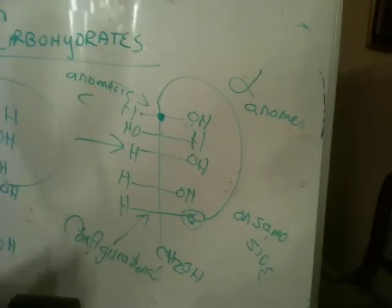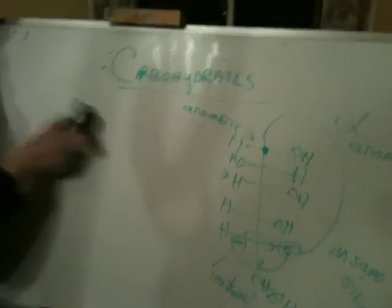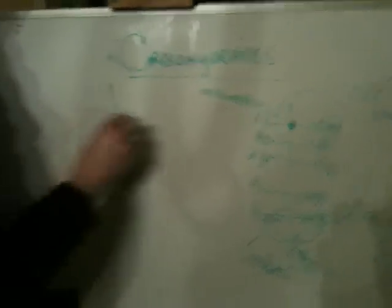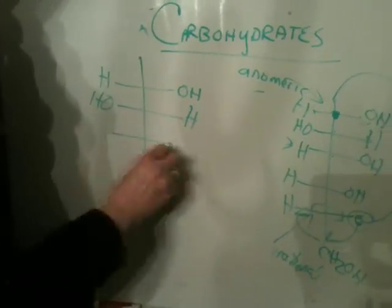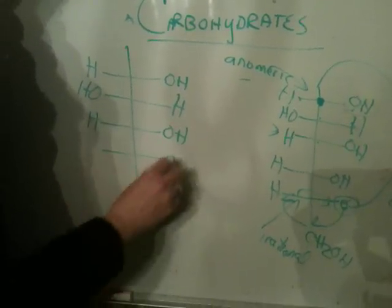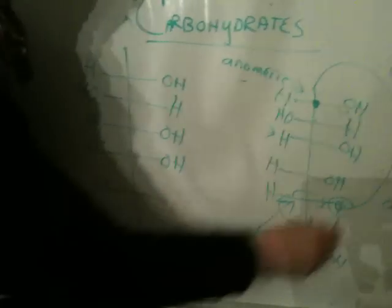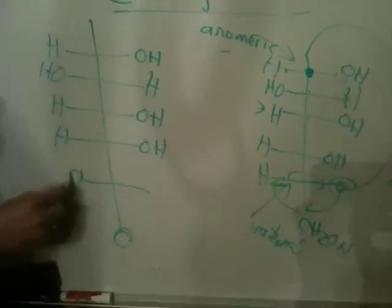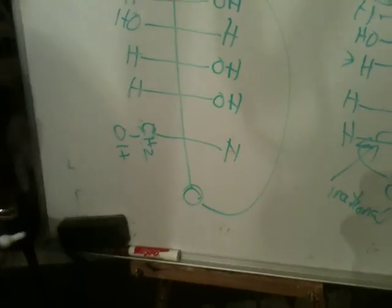So what I'm going to do is first rotate this Fischer projection so that the O is on the vertical and the CH2OH is on the horizontal. So this O is going to come down here, this goes here, this goes here, and now we still have that big, long elastic bond.